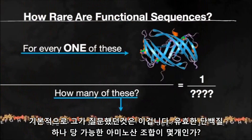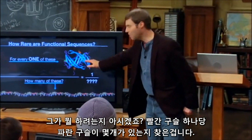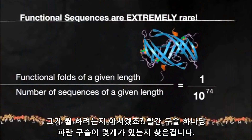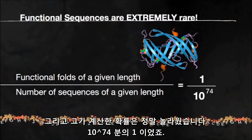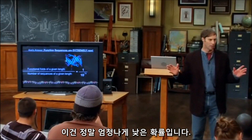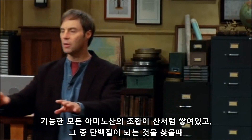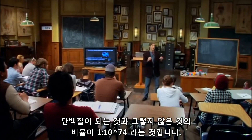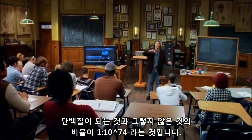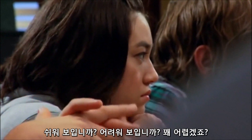Essentially, what he was asking was: for every protein that forms a function, how many combinations of amino acids are there? He was trying to get that marbles-to-marbles ratio — the red marbles we want versus the blue ones we don't. He came up with an amazing number: 1 in 10 to the 74th power. That is an enormously small probability. The ratio of functional sequences to non-functional ones is like 1 to 10 to the 74. So finding a functional protein by chance is very hard.